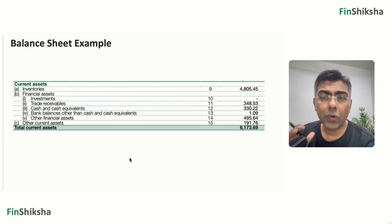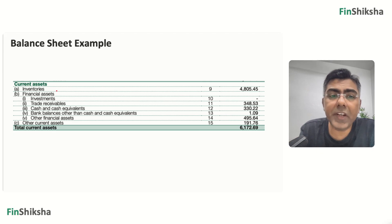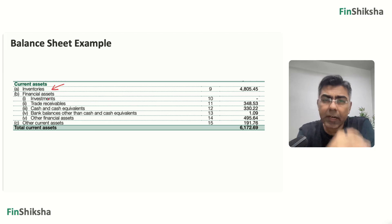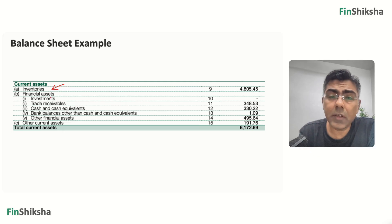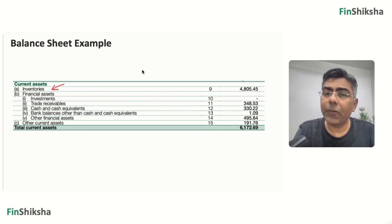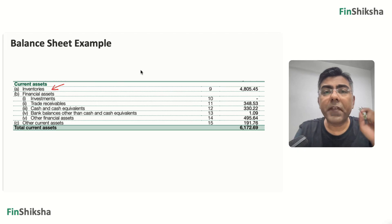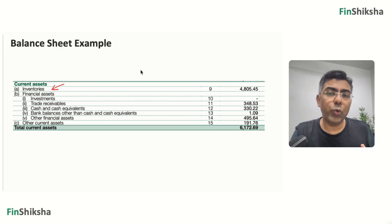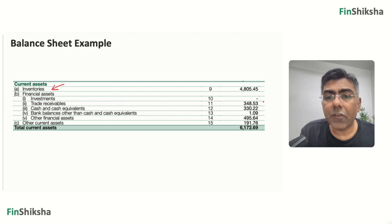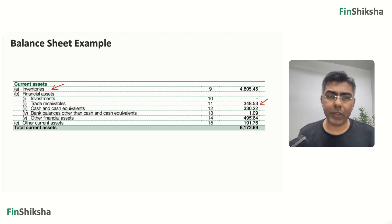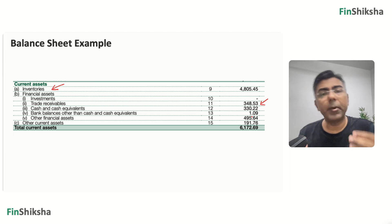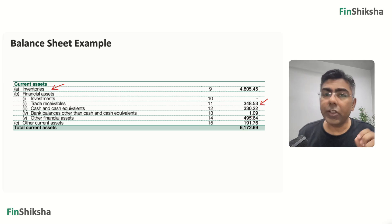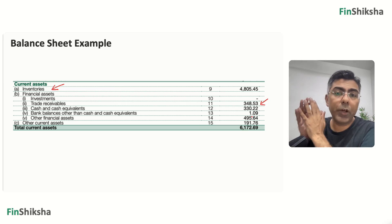Let's look at current assets. As you'd imagine for a retail business, inventories would be the largest current asset. There are also financial assets — investments — though DMART doesn't have short-term investments, so that number appears zero. Trade receivables are amounts where you've sold something but the customer is yet to pay. DMART has sales north of 50,000 crore, yet this is a very small number — logical because in retail, customers pay upfront when they buy. So the receivables number is small compared to overall sales.